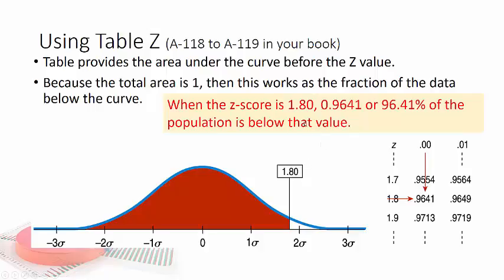So when the z-score is 1.80, then 0.9641 or 96.41% of the population is below that value. So it's the area to the left.